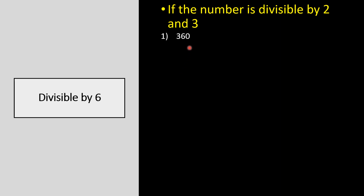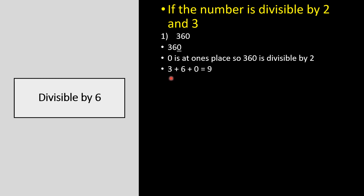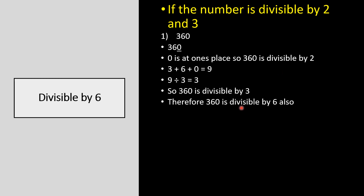For example, 360: first check for 2 — the ones place digit is 0, so 360 is divisible by 2. Now check for 3 — 3 + 6 + 0 = 9, and 9 divided by 3 equals 3, so 360 is divisible by 3. Because it is divisible by both 2 and 3, 360 is divisible by 6 also.